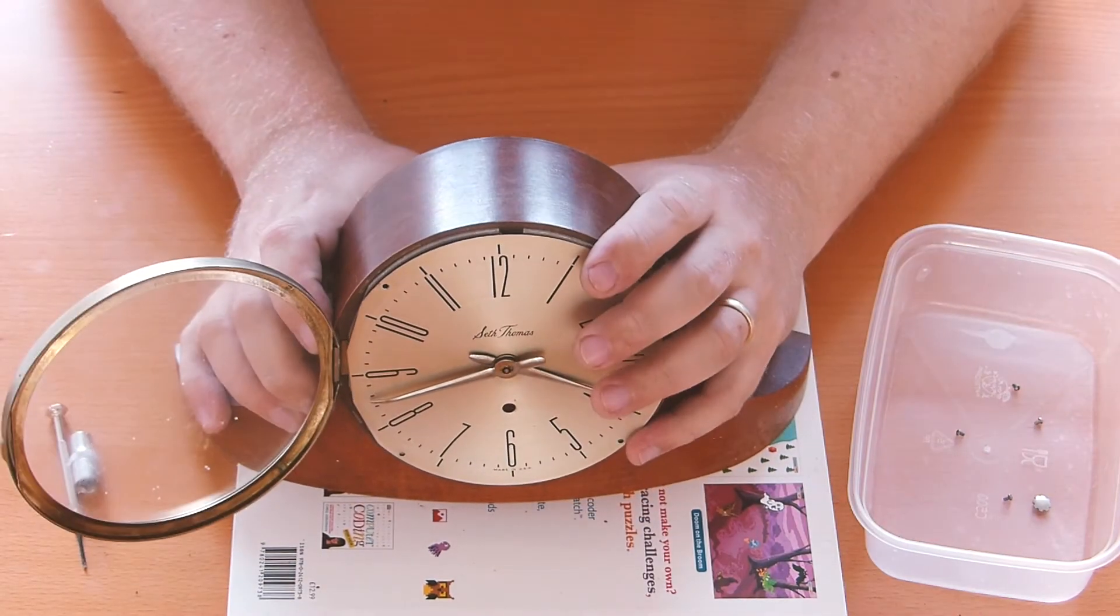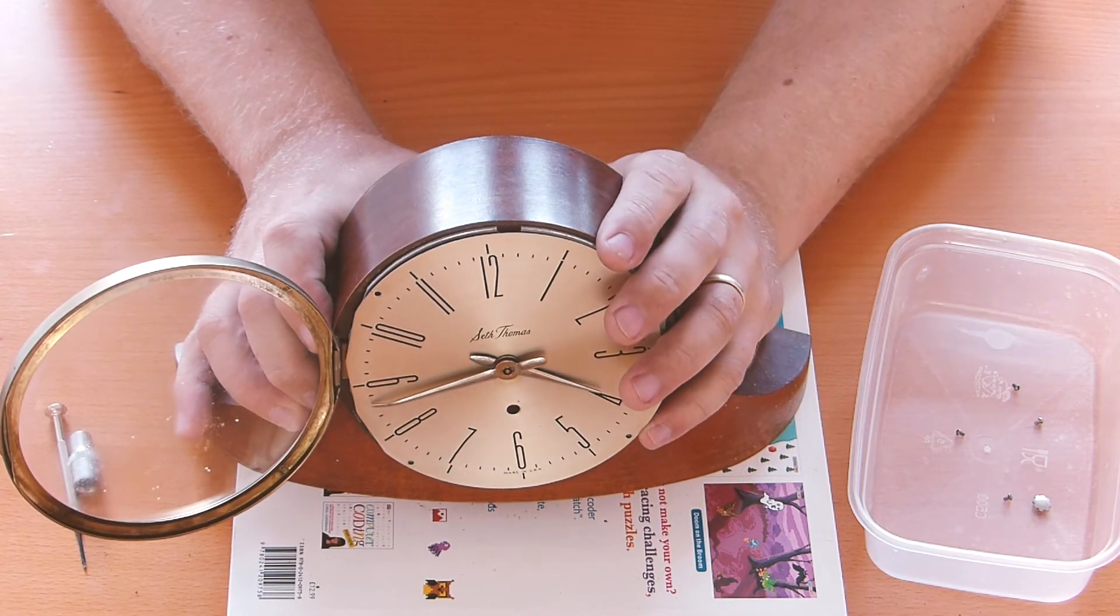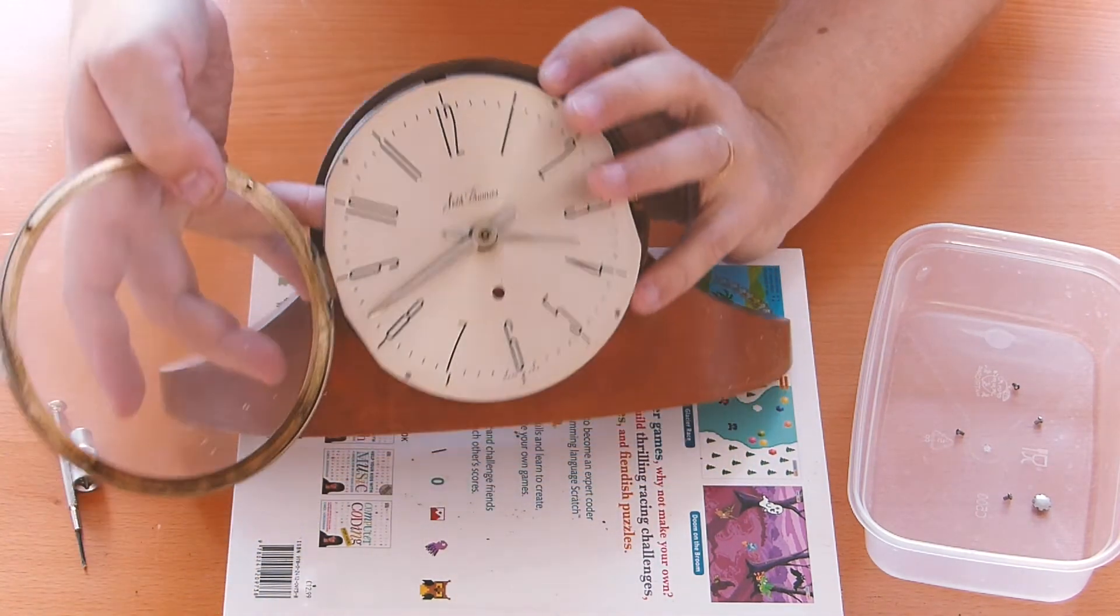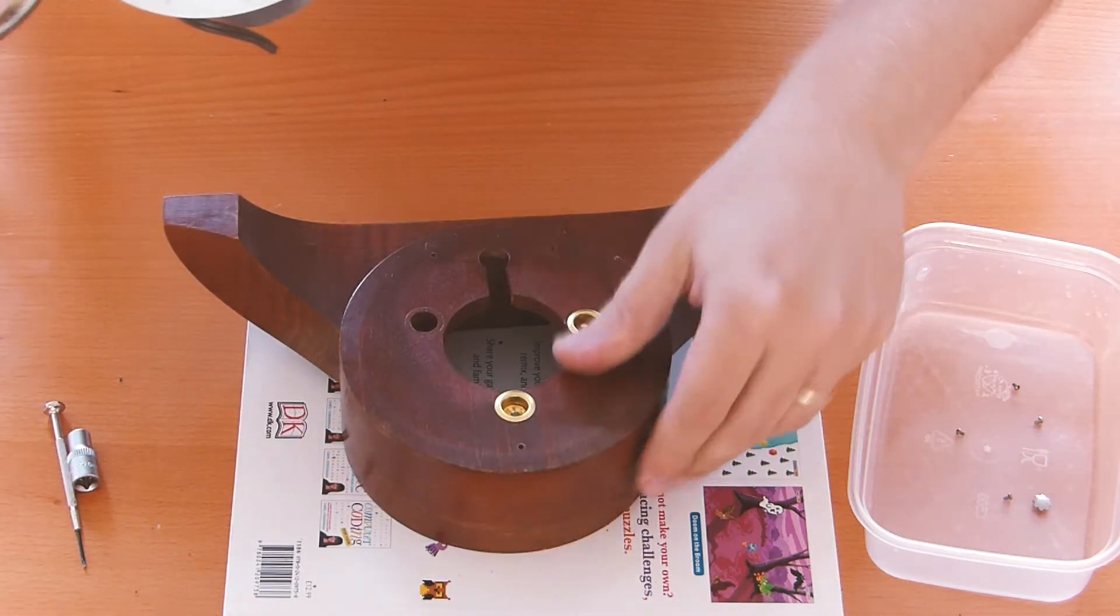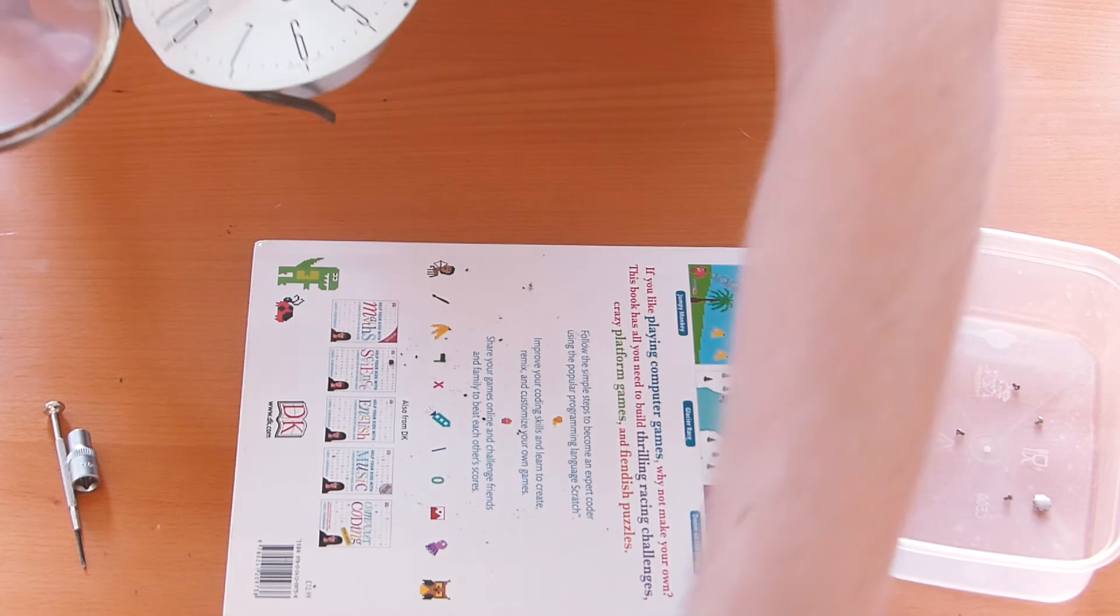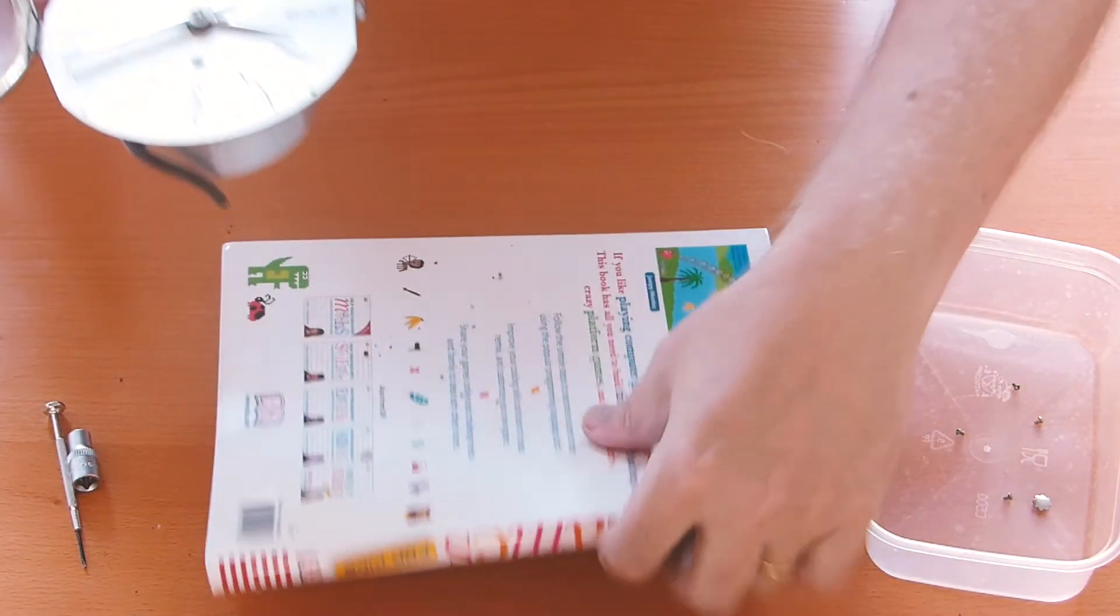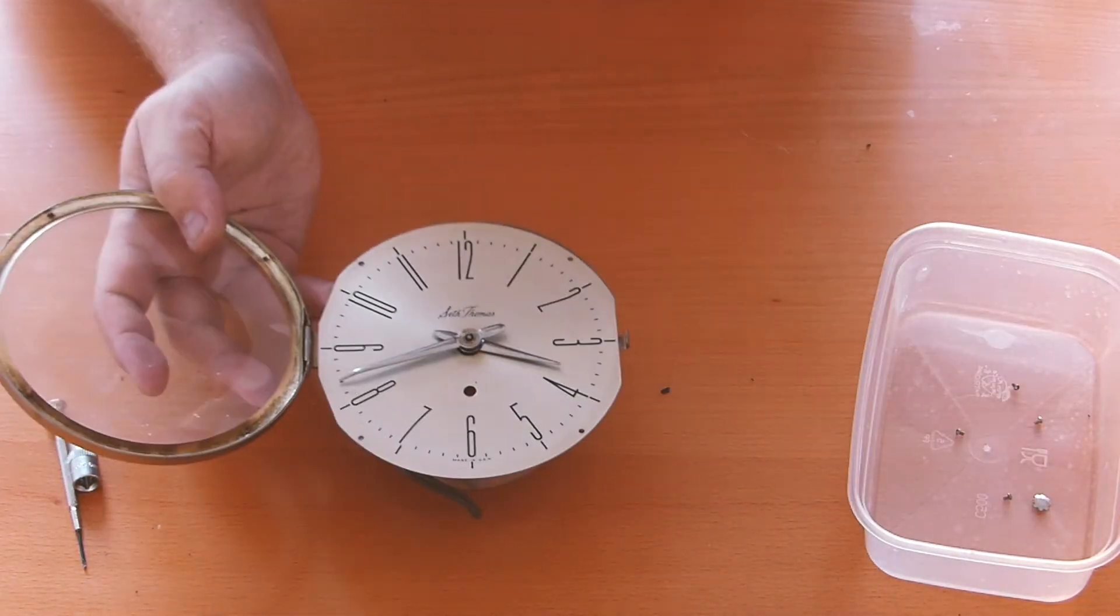But eventually we did manage to get it and then from the back we were able to push the clock movement out and the clock face and it came out in one nice little bit like you can see here, leaving the case pretty much untouched. Nice wooden case and then the clock movement at the front here.